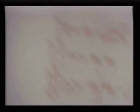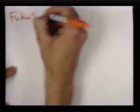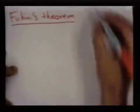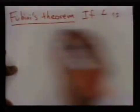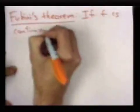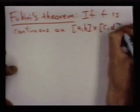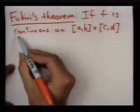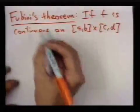And they'll be equal to the double integral over the region we're talking about. So this is Fubini's theorem, which says if f is continuous on a rectangle, and actually this is true for far more functions than just continuous ones.